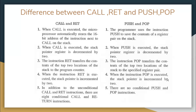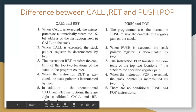The instruction pop transfers the contents of the top two locations of the stack to the specified register pair. When pop is executed, the stack pointer is incremented by two. In addition to the unconditional call and return instructions, there are eight conditional call and return instructions, whereas for push and pop, there are no conditional push and conditional pop.